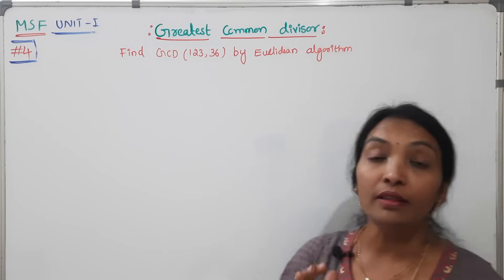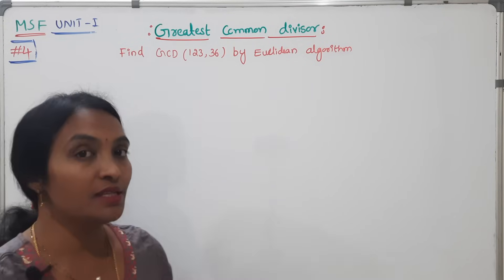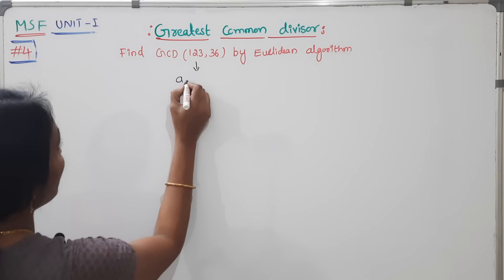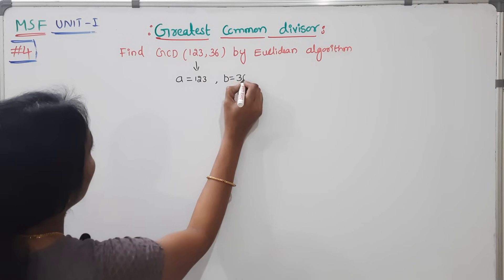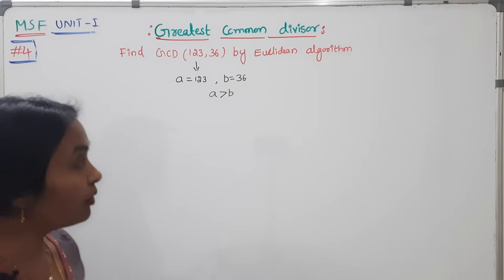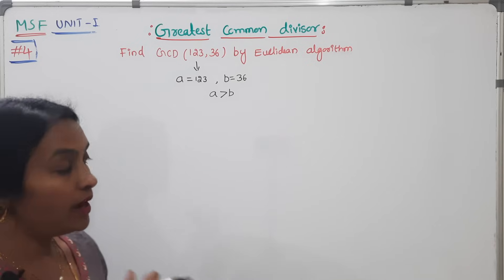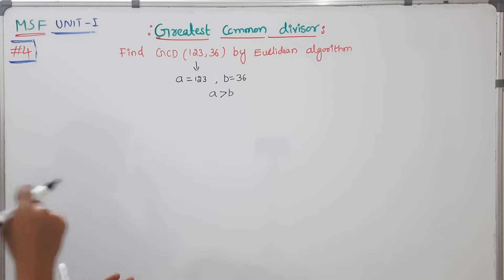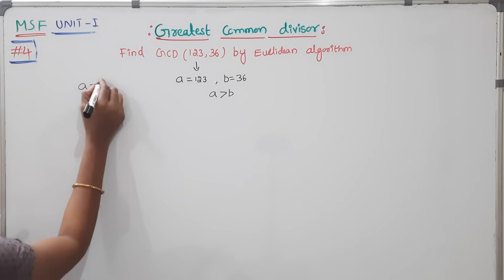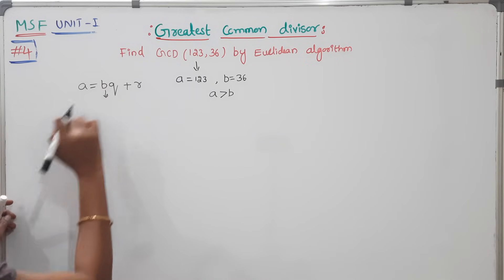Find the GCD by using Euclidean's algorithm. The division algorithm formula is: A is equal to BQ plus R. When R is the remainder, that B is nothing but the GCD of these two values. Here the condition is A is greater than B.